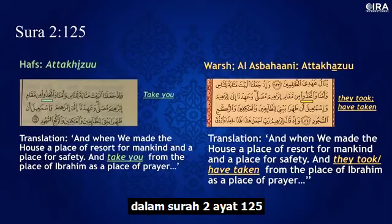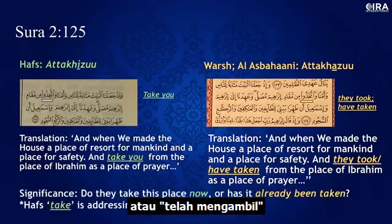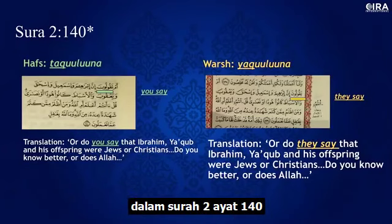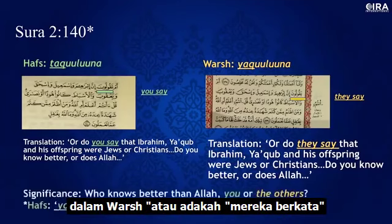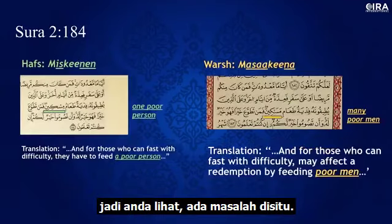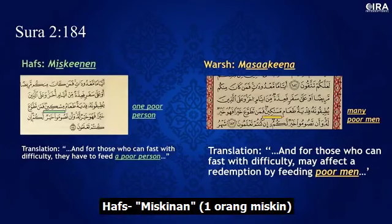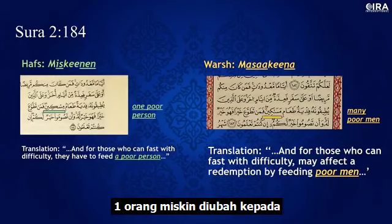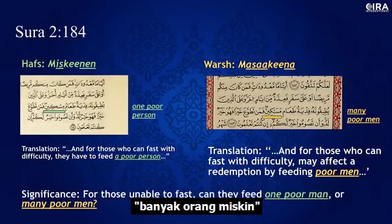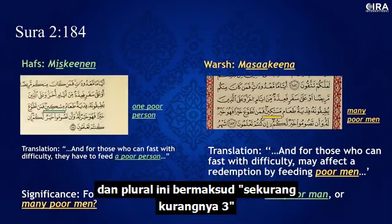In Surah 2:125, Hufs has 'and take you' — addressing a command — changed in Warsh to 'ittakhadhu,' meaning 'they took' or 'have taken.' Do they take this place now, or has it already been taken? In Surah 2:140, Hufs says 'Or do you say that Ibrahim, Yaqub, and his offspring were Jews?' — addressing you. Warsh says 'or do they say?' — a third-person pronoun. In Surah 2:184, Hufs has 'Miskeen' — one poor person — for those who cannot fast. Warsh changes it to 'Masakeen' — many poor persons. Since Islam is a religion of works and this is about fasting, feeding one is very different from feeding many.